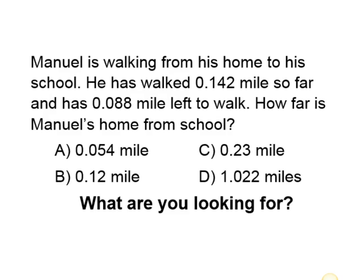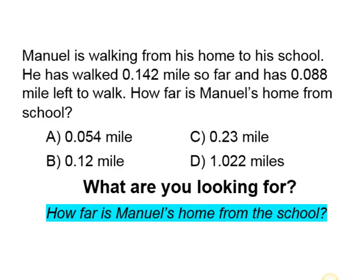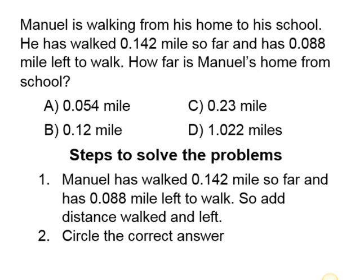What are we looking for? We are looking for how far Manuel's home is from the school. Our steps to solve the problem are: one, Manuel has walked 0.142 miles so far and has 0.088 mile left to walk, so we need to add the distance he has walked and also the distance he has left to walk. Two, circle the correct answer.